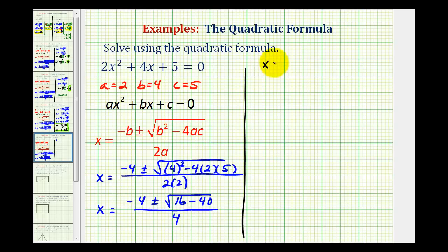So we have x equals negative 4 plus or minus the square root of 16 minus 40 is equal to negative 24. This is all over 4.